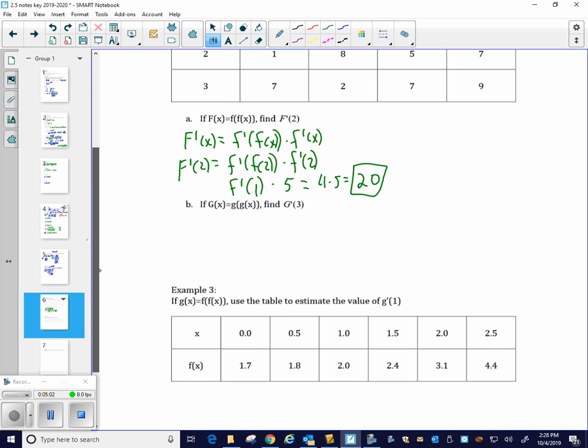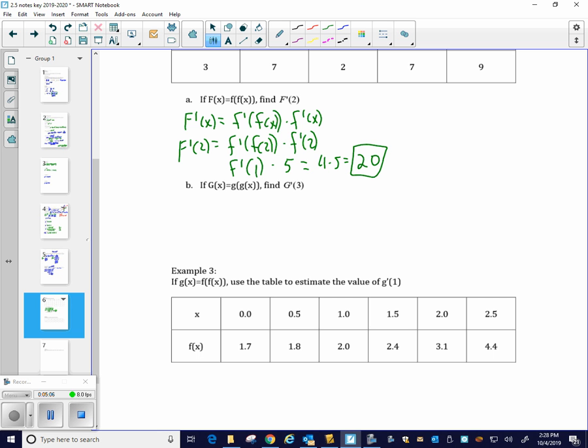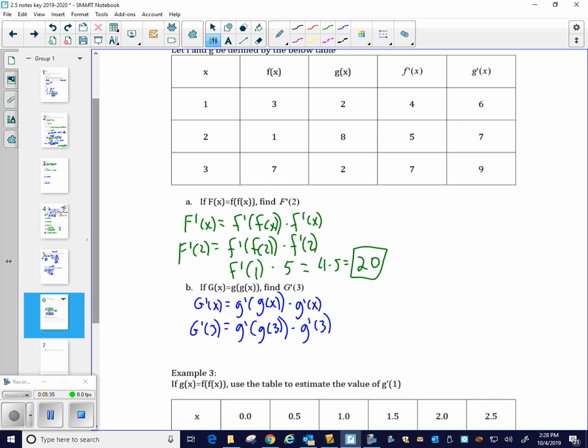Okay. We did the first one here, f of f prime. I'm going to go ahead and fill out g of g here. So we want capital G prime of three. So we need g prime of x, which is outside derivative times the inside derivative. And we want that at three. So g prime of g of three, times g prime of three. So go up to our chart here. So g of three, that's two. So I'll have g prime of two. And then g prime of three is nine. And then g prime of two is seven. So seven times nine is 63.